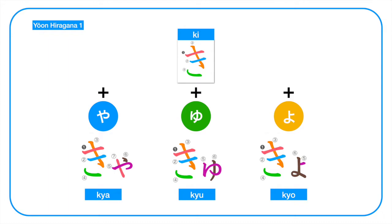Instead of ki-ya, we pronounce as kya. Ki-yu becomes kyu. Ki-yo becomes kyo. Kya, kyu, kyo.